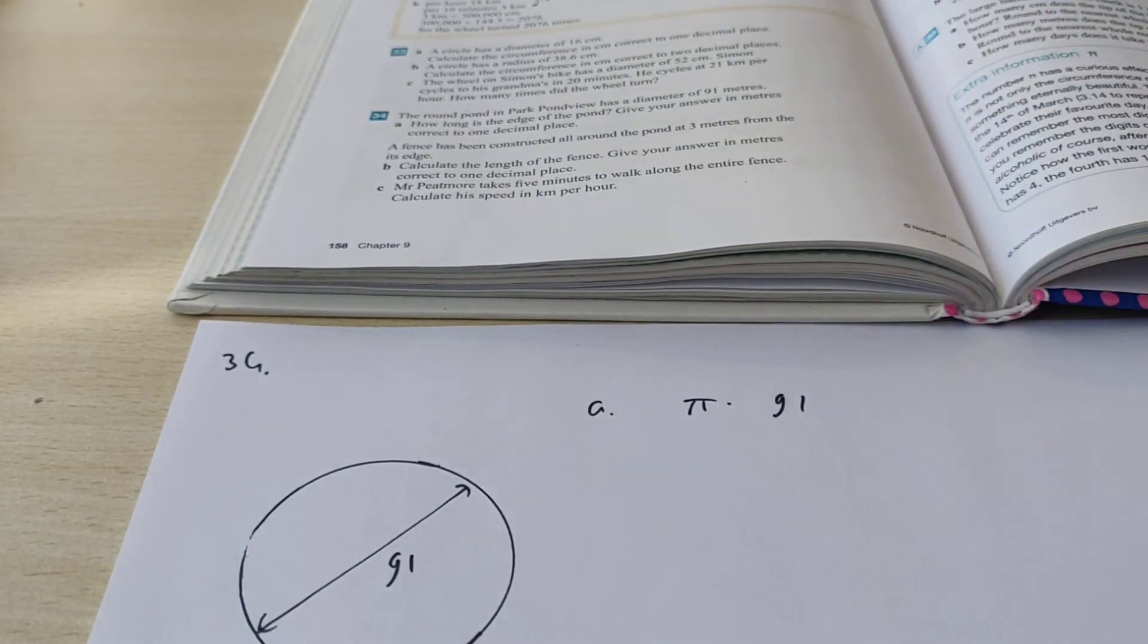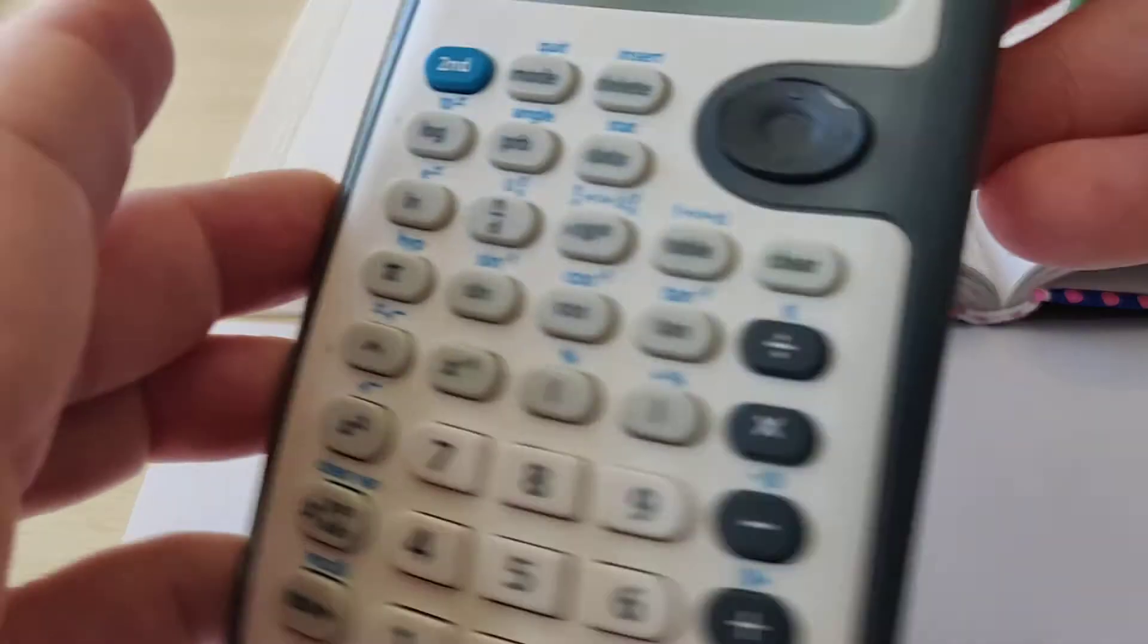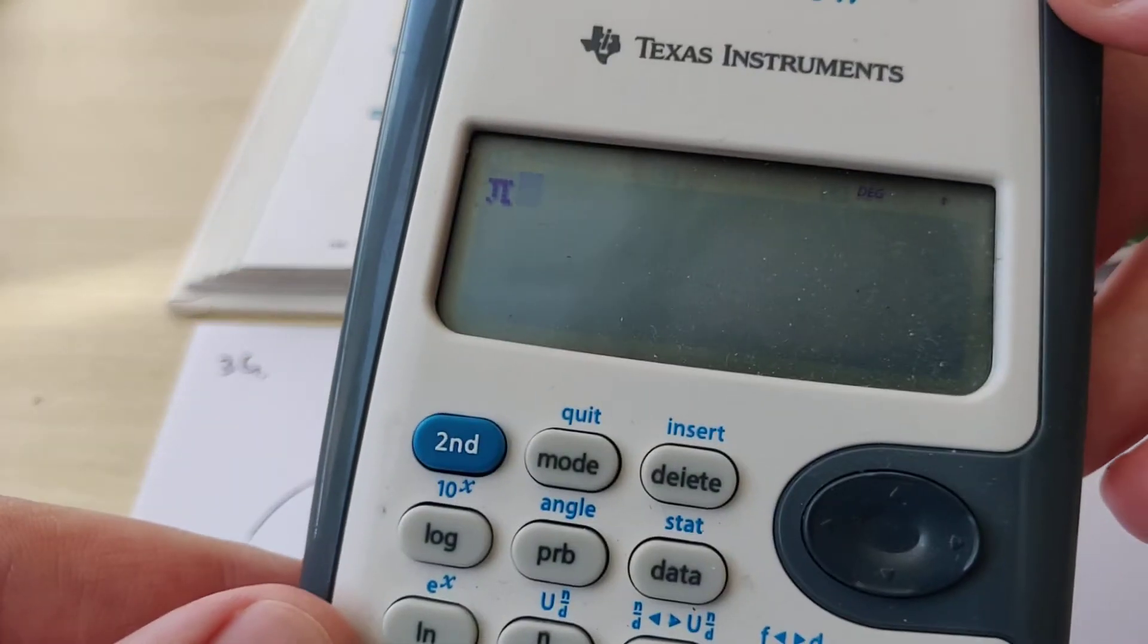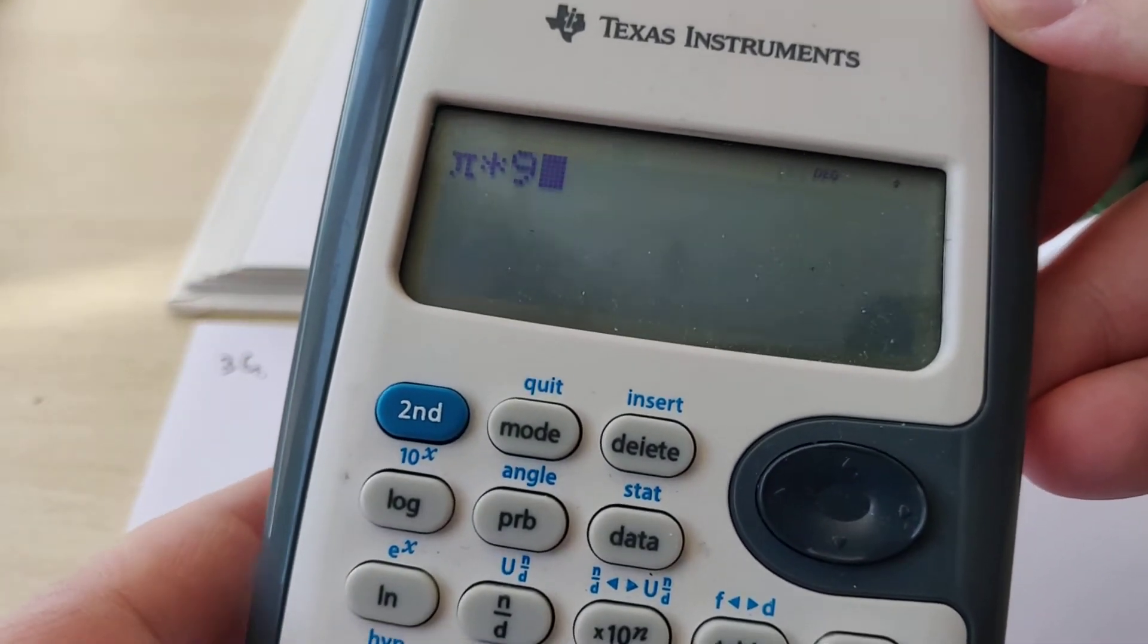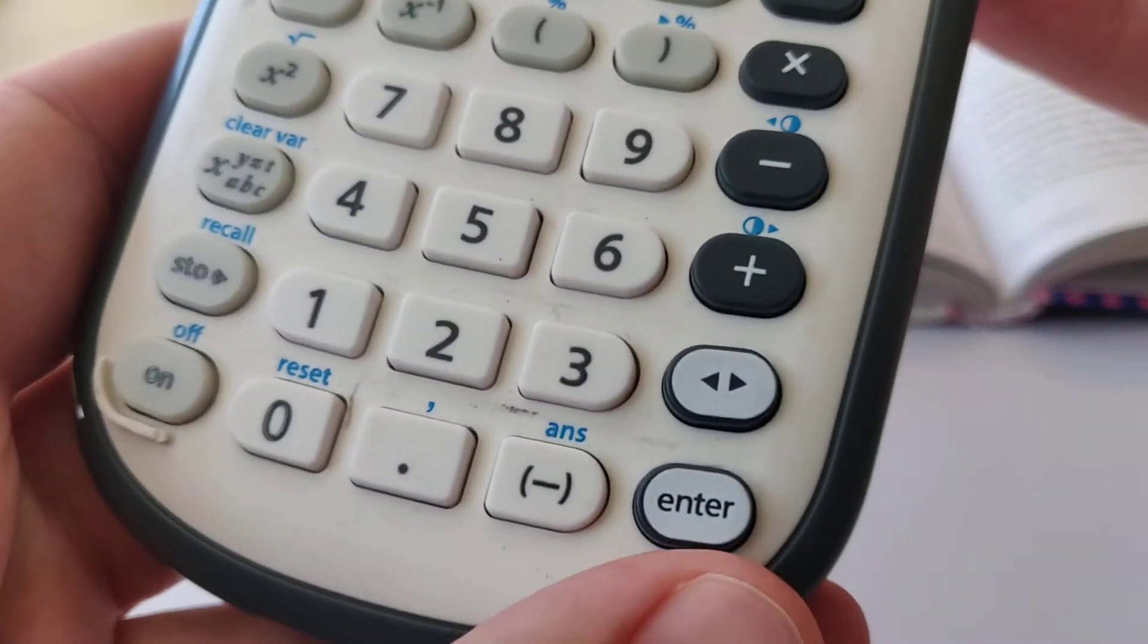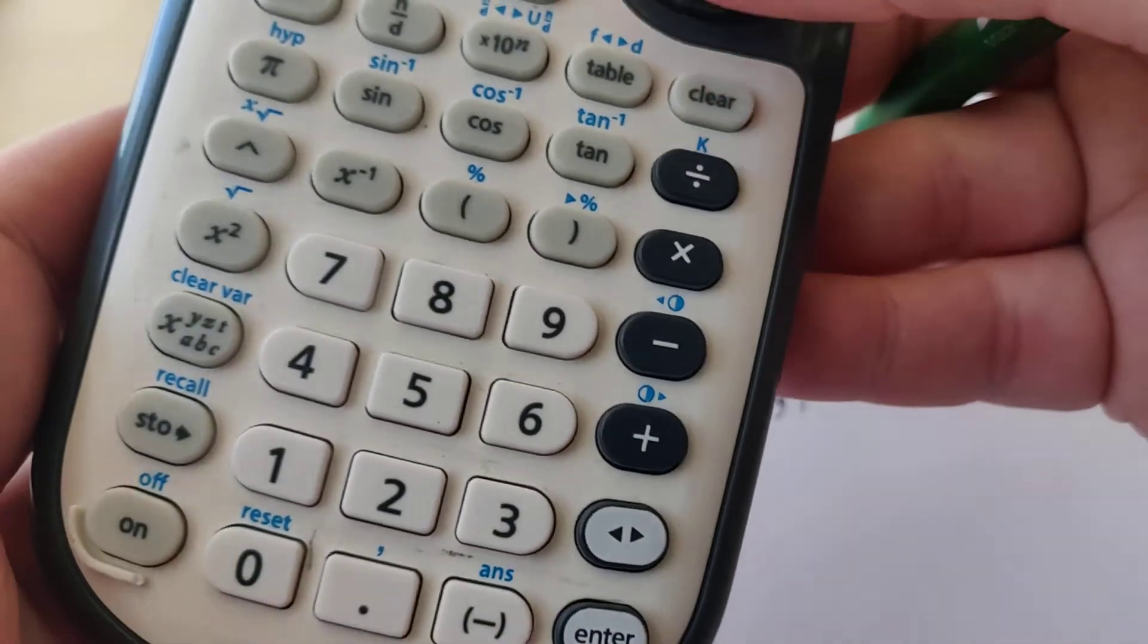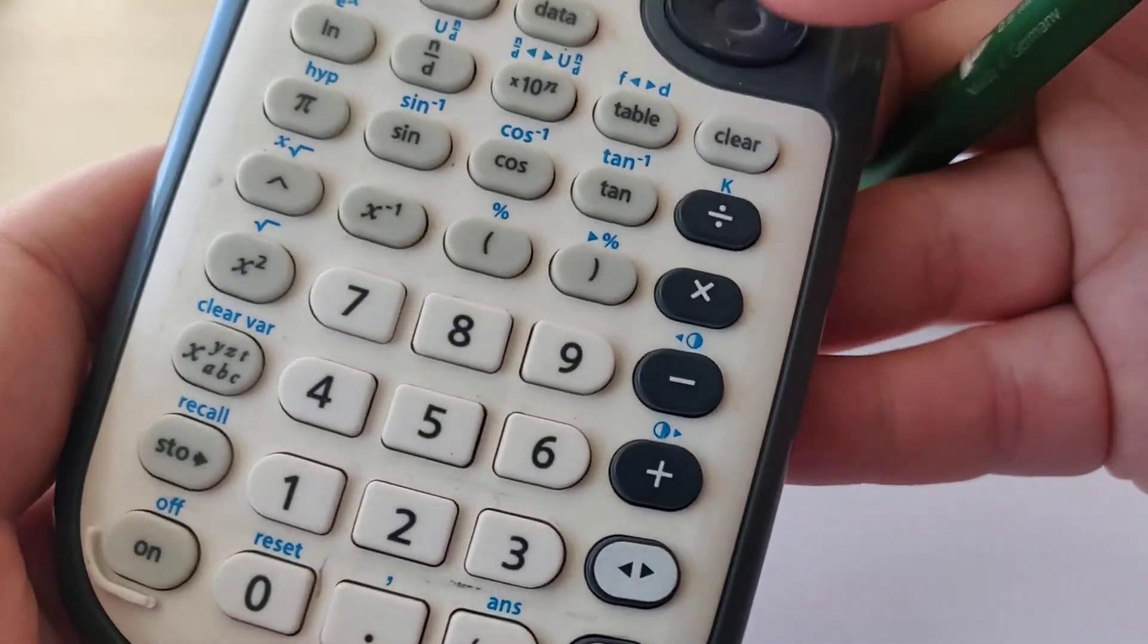Using your calculator, you can type that in. Remember the π button is over here. So π times 91. Then if your calculator says this, you have to press the two arrows. Oh wait, that's the wrong button. Sorry about that.